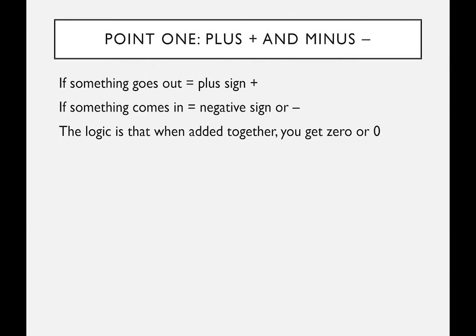Two key points about double-entry bookkeeping. The first point — the way Paciolo did it 500 years ago — is that anything leaving or going out is recorded as a plus, and anything coming in is recorded as a minus. The logic is that when you add the two together, you get zero. It's counterintuitive, but that's the system economists and accountants use.